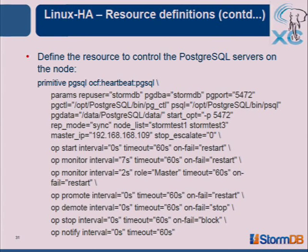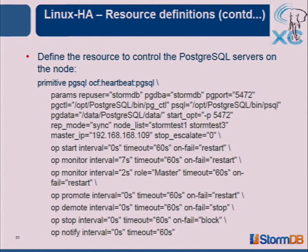This is actually the PostgreSQL resource agent available as part of the Linux HA framework, which contains streaming replication support. You need to provide parameters such as your replication user, your DBA user, which port, the path to pg_ctl, and path to psql. It has defaults if you don't provide the path, but it's good to be clear about what you're using. It also has a replication mode parameter — synchronous or asynchronous. You need to provide a list of nodes on which your servers are running, using short hostnames, not IP addresses.